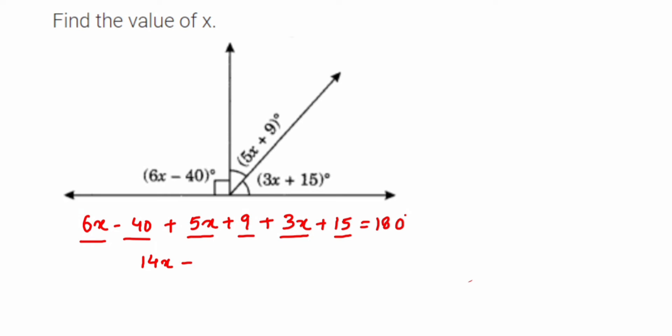So minus 16 is equal to 180 degrees. Now this 16, when I'm going to transpose this to the other side, I'm going to bring all the constants to one side. So from here we'll get 14x is equal to 180 degrees plus 16 degrees.